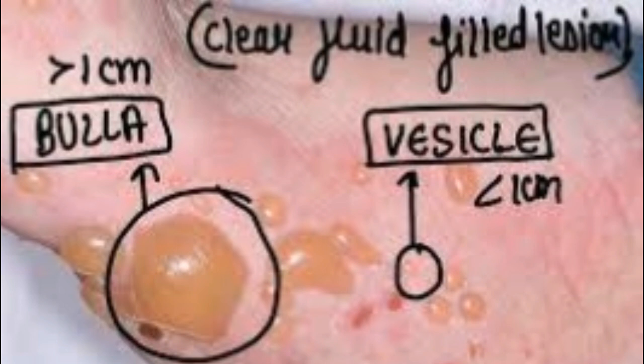A blister is a fluid-filled space in the epidermis or immediately below the epidermis. Depending on the size, blisters are classified as vesicles when less than 1 cm in diameter, or bullae when larger than 1 cm. In addition to fluid, blisters often contain inflammatory cells and/or epidermal cells.